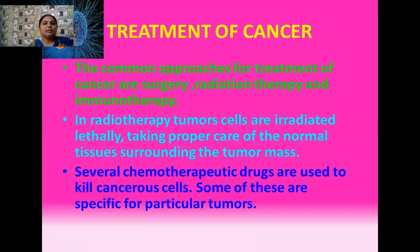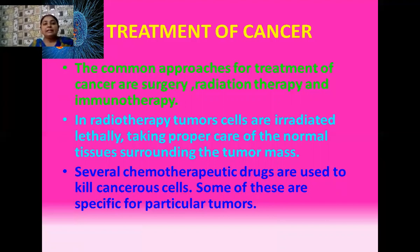Now I am going to discuss the treatment of cancer. There are various approaches used for the treatment of cancer: it may be surgery, sometimes radiation therapy in which various types of radiations are used, and chemotherapy is also there. In radiotherapy, the tumor cells are irradiated carefully, taking proper care of the normal tissues surrounding these tumor masses — that means they are targeting only the tumor cells, and the rest of the tissue surrounding them is protected from the effect of these radiations.